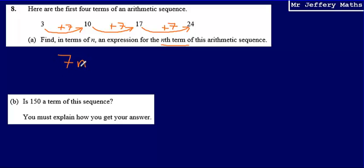Then I need to figure out what is going to come after my 7n — do I need to adjust this at all, or is it just 7n? If I think about this, that's the first term of my sequence, this is the second, this is the third, and this is the fourth. What I'm saying by writing 7n is that if I substitute 1 into 7n, will that give me the first number in my sequence? And the answer is no — 7 multiplied by 1 gives me 7, not 3.